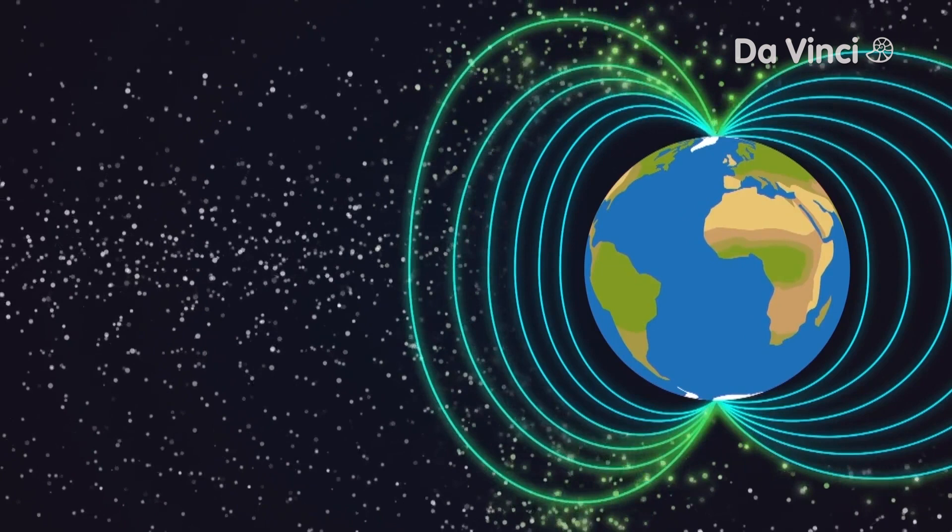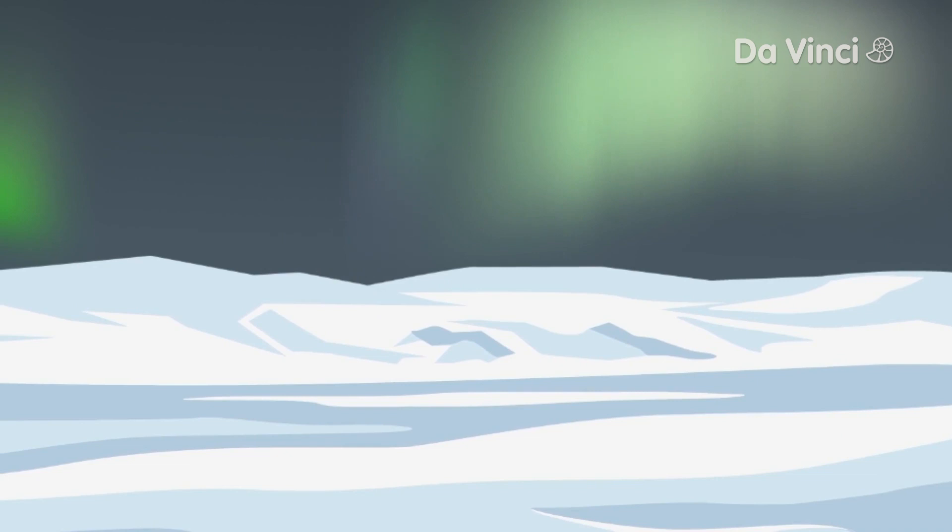When they hit the magnetic field, they may start to glow. These green glowing particles are the polar lights you can see in the sky around the poles.